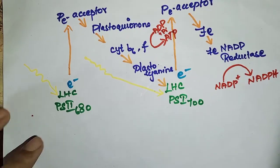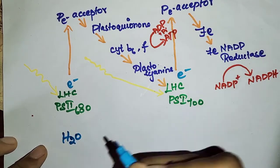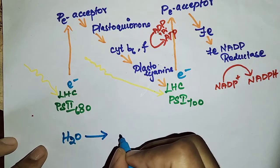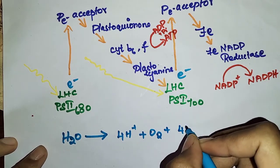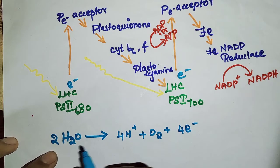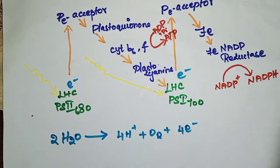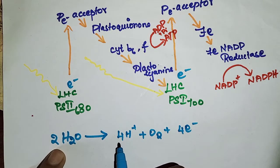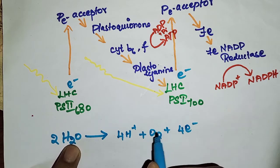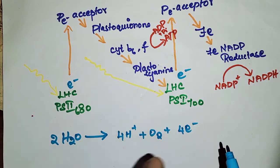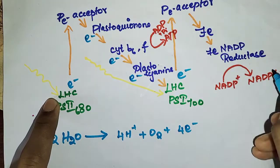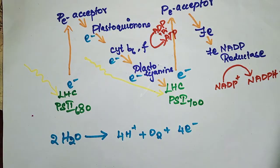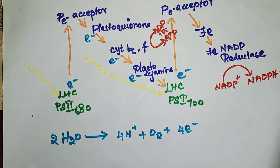This PS2 complex is placed on the inner side of the thylakoid membrane, while PS1 is placed outside of the thylakoid membrane. PS2 splits the water. Water splits on the inner side of the membrane: 4H2O breaks down into 4H+ and one O2 molecule and four electrons. This electron goes and reaches here, coming to form NADPH. So this is non-cyclic photophosphorylation.